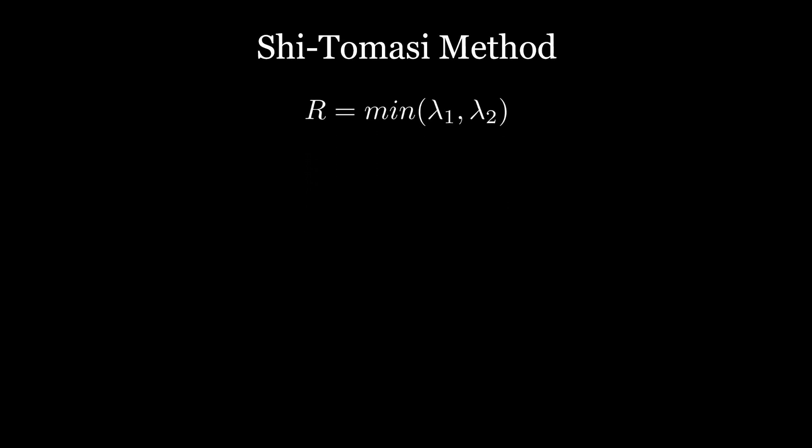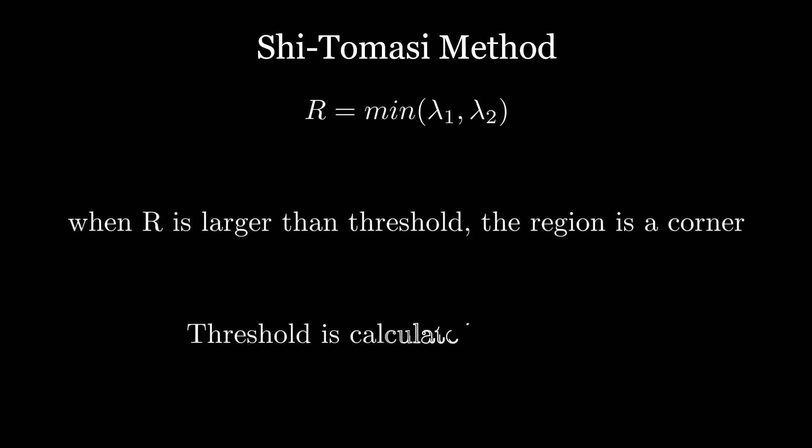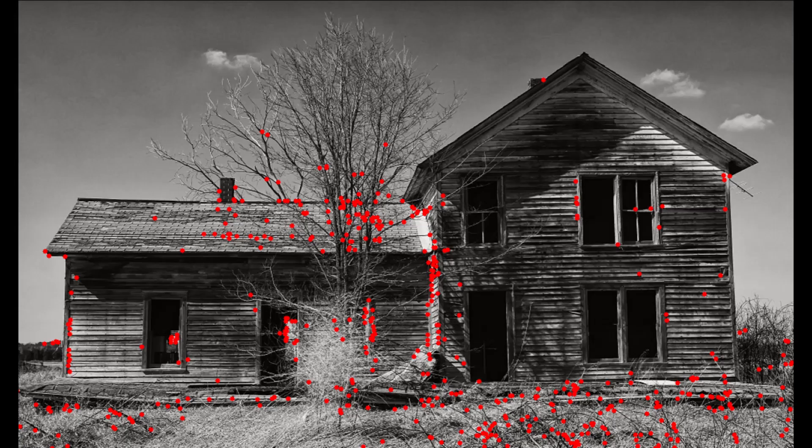Now, let's look at another method called Shi-Tomasi method which is very similar to our first method but R is calculated as the minimum of eigenvalues of M. Let's implement the Shi-Tomasi method on our image and see the result.